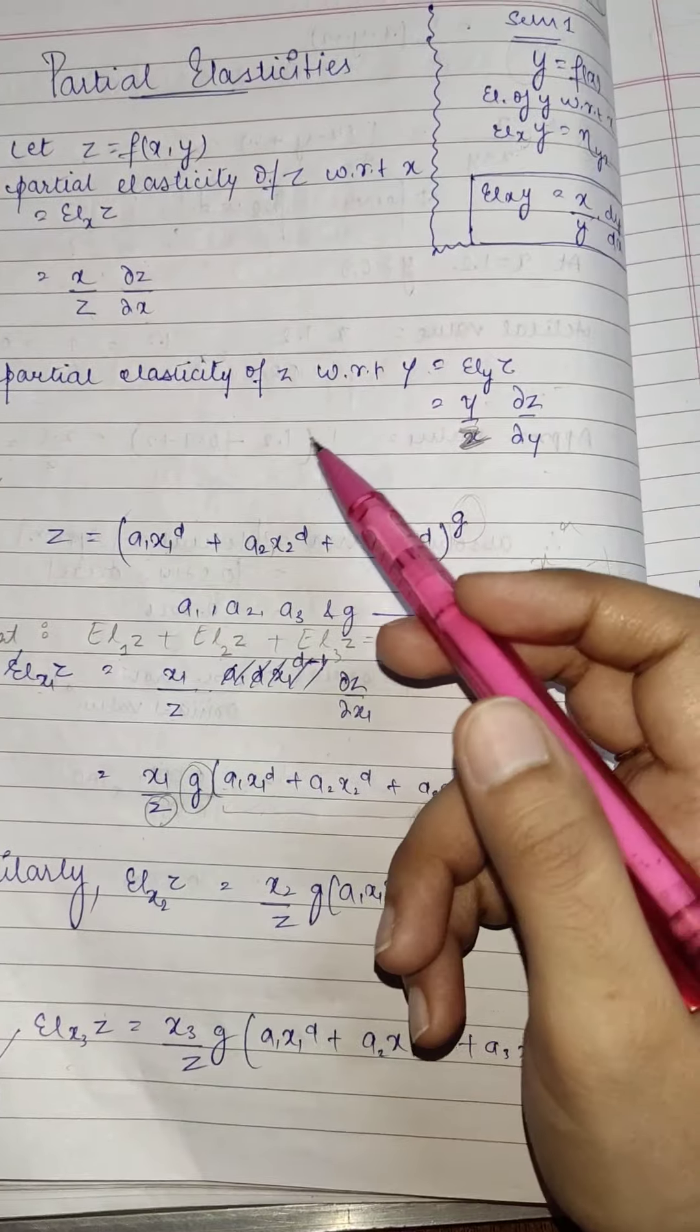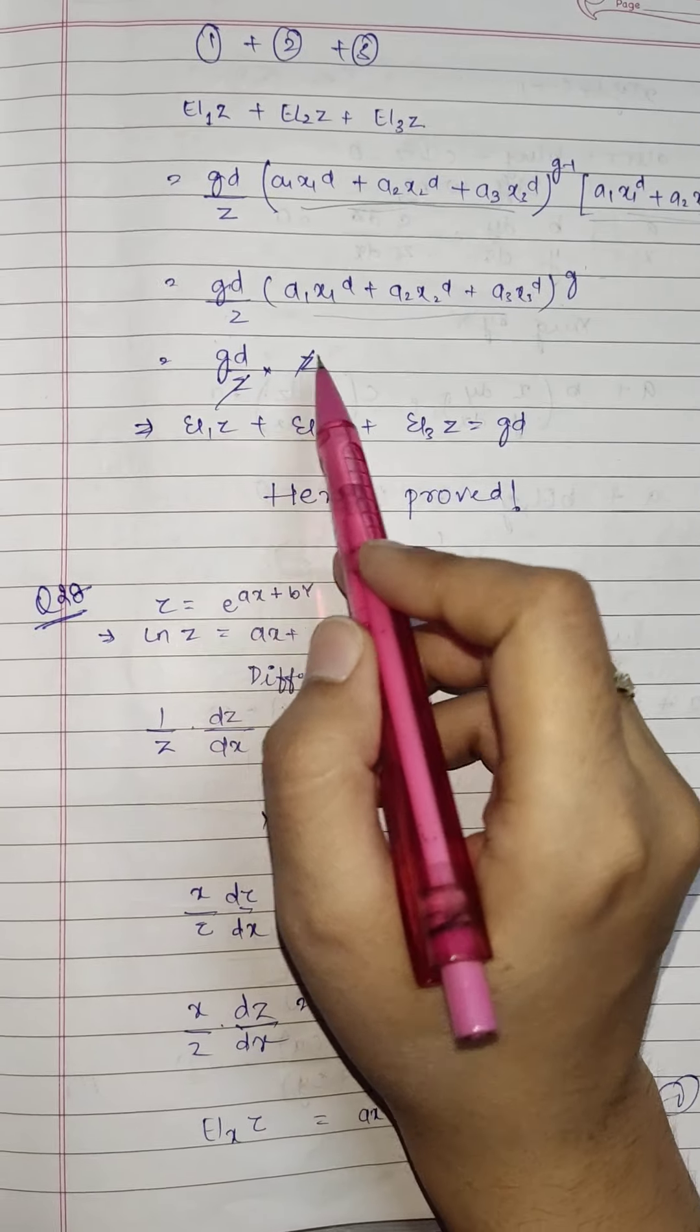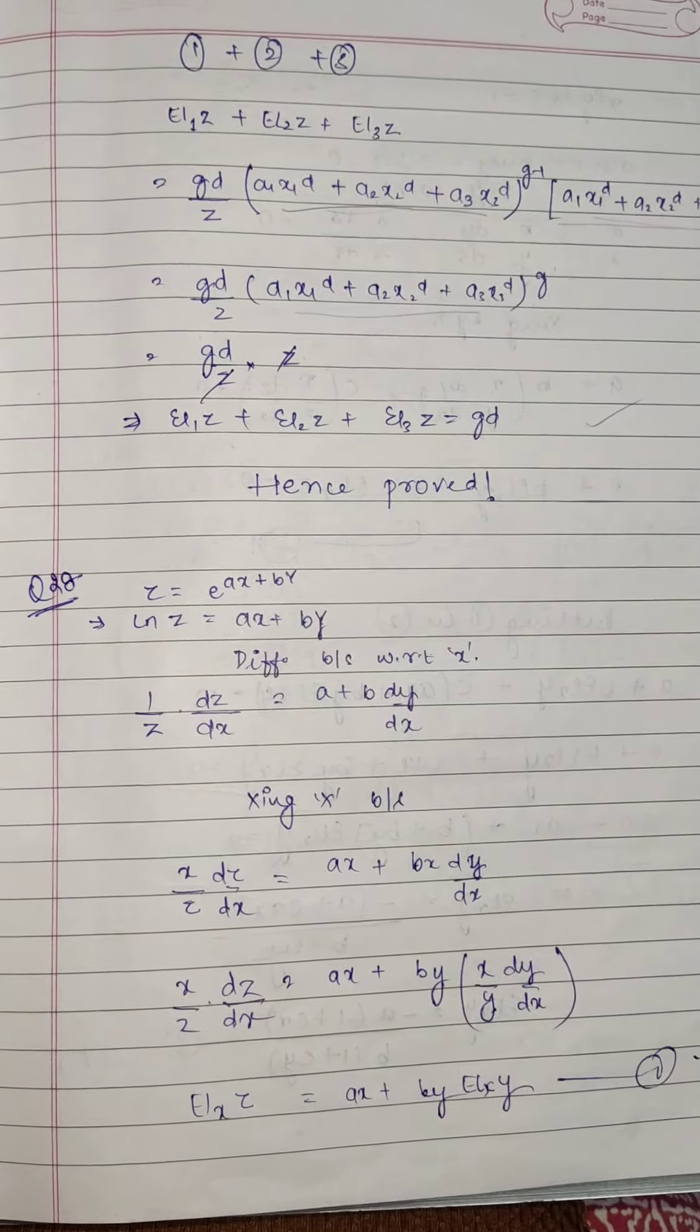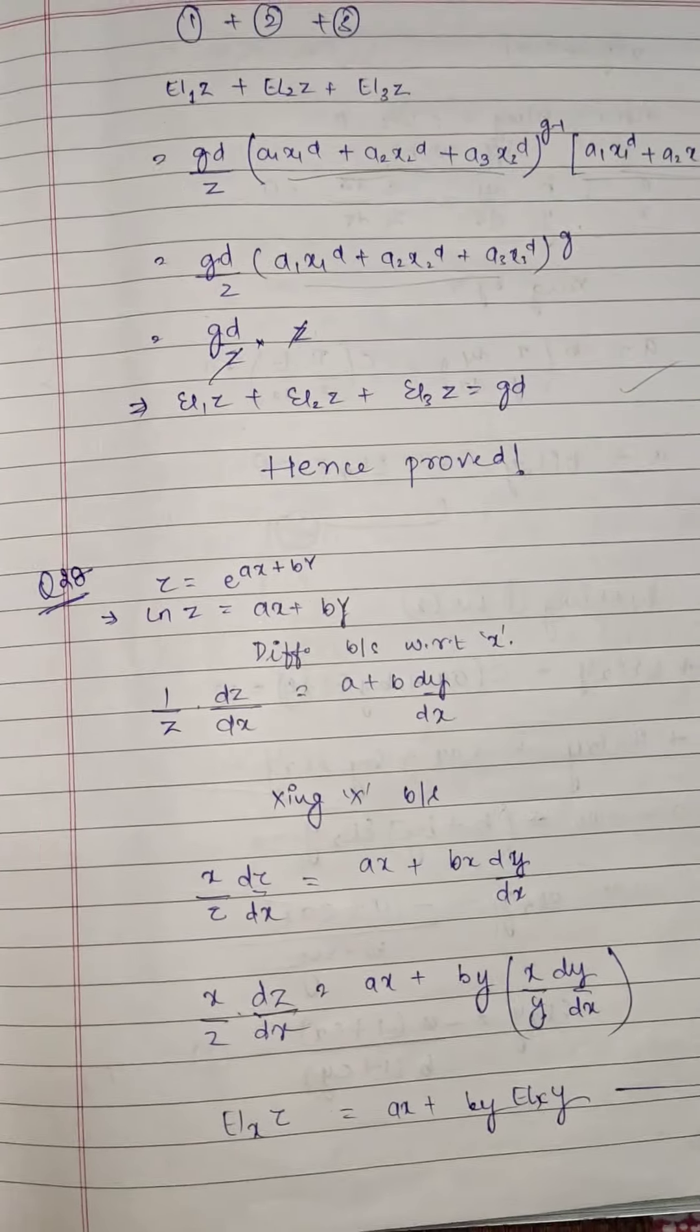But oops, what is this? This is nothing but your function z. So this will become gd upon z times z, that will give you gd, and hence you have successfully proved this particular part as well.